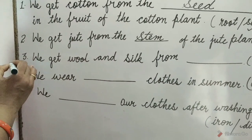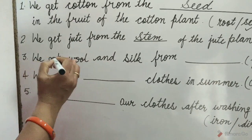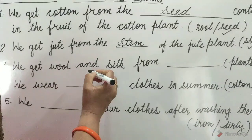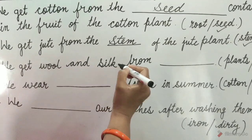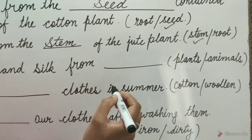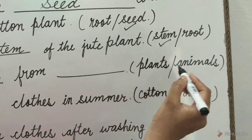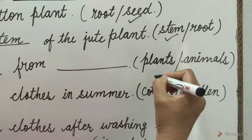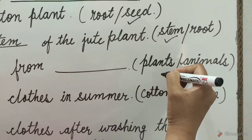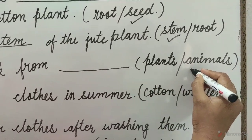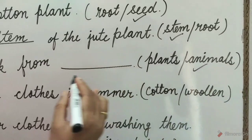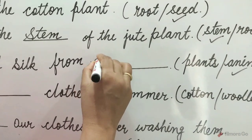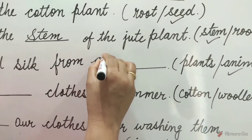3. We get wool and silk from the blank. The options are plants, animals. Animals is the correct option, so write here: animals.